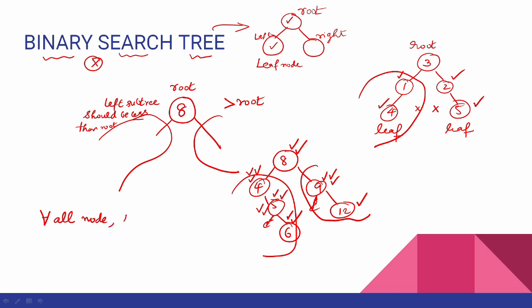Left subtree must be lesser than the node value. Right subtree must be greater than the node value. This is one of the basics.